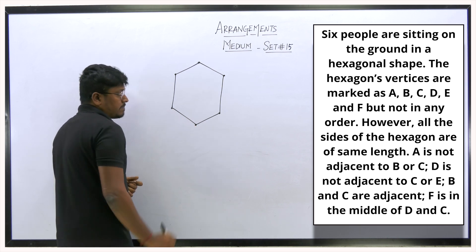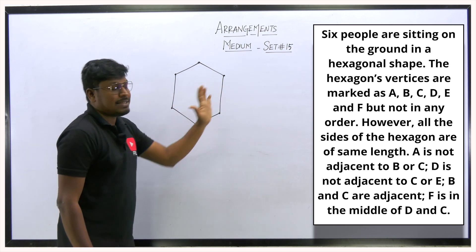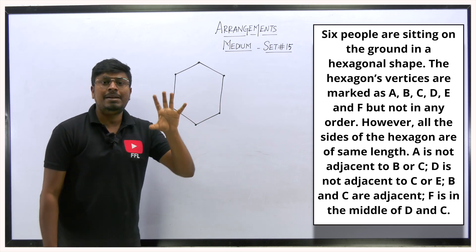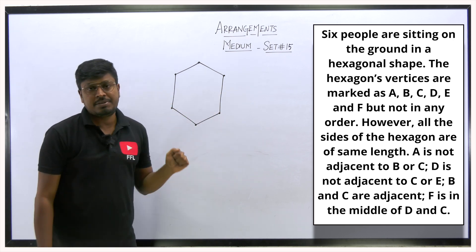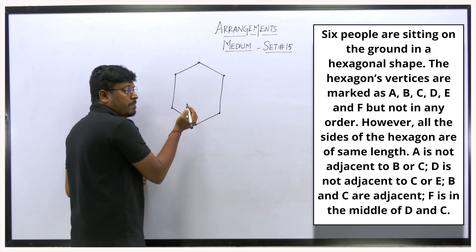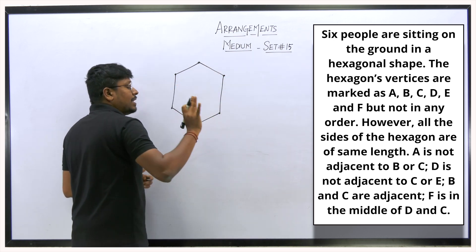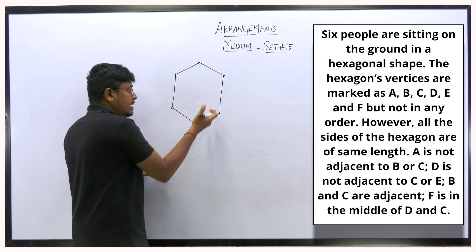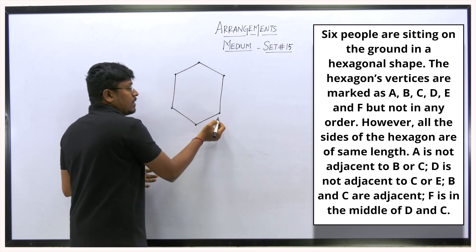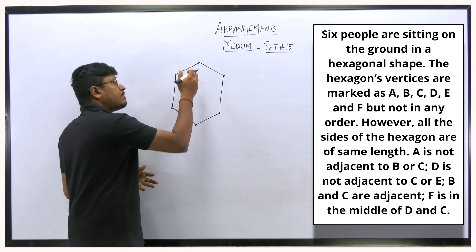This arrangement is actually easy level, but I took it at medium level because you need to understand this concept. In some medium level hexagonal shape arrangement questions, they will talk about persons sitting at vertices facing the center. In some questions they won't say whether the person is facing center or outside — they will just say persons are sitting at the vertices of a hexagonal shape.